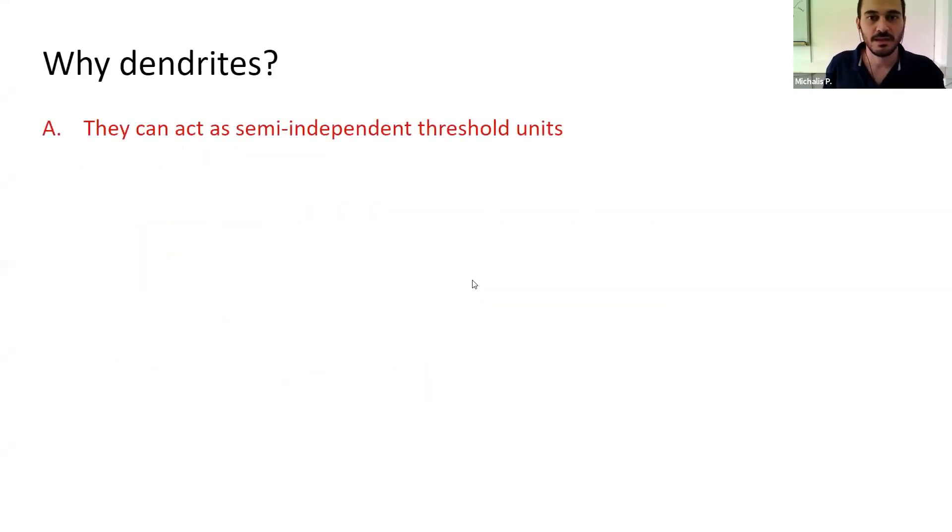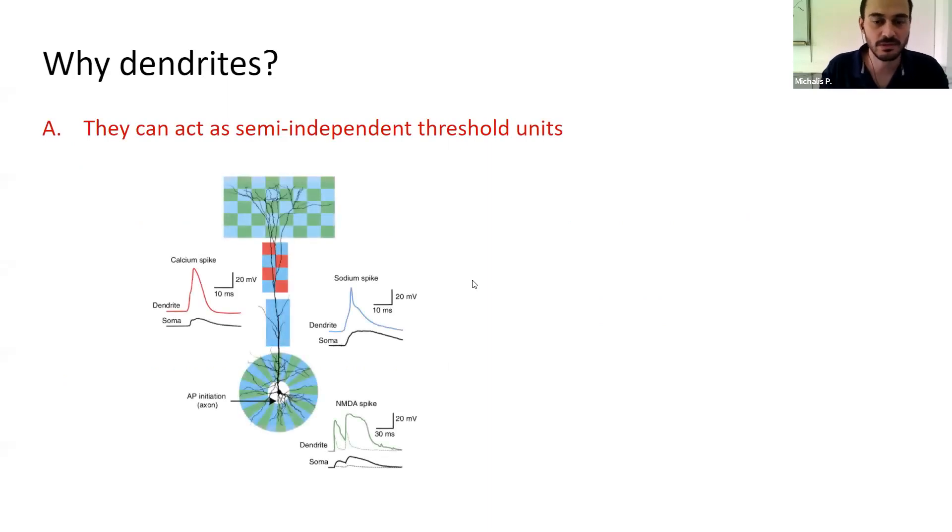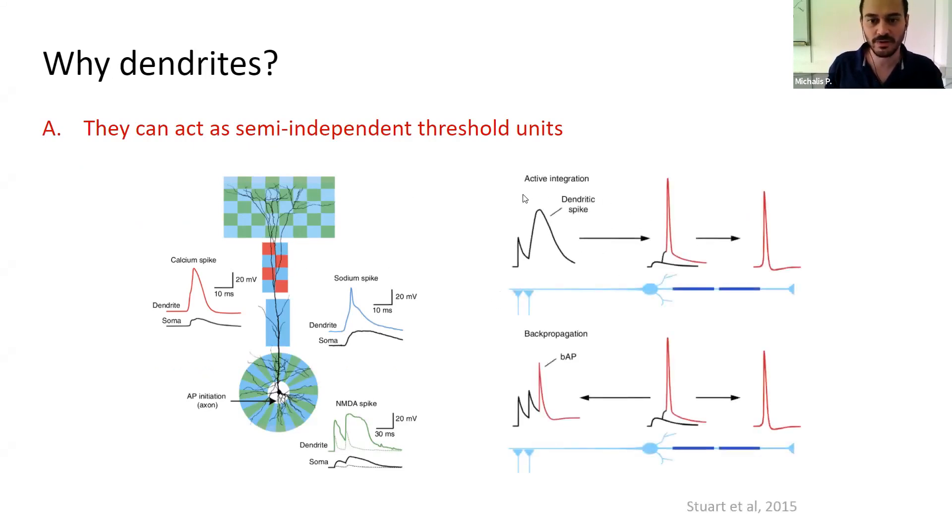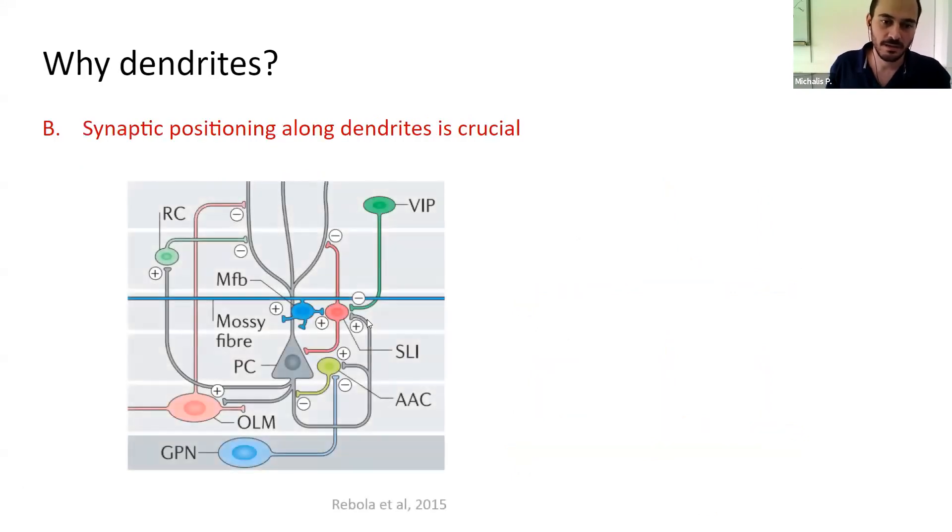So why dendrites? One of the main reasons is because they can act as semi-independent threshold units. They have some voltage-gated channels, either calcium, sodium, or NMDA channels, and they can introduce local dendritic spikes, similar to what happens in the soma. Also, these spikes can be either forward propagating, traveling from the dendrite to the soma, or backward propagating, traveling from the soma back to the dendrites. So importantly, dendrites are not isopotential. They have very complex dendritic structures, and the numerous pathways, either inhibitory or excitatory, go to specific dendritic locations.